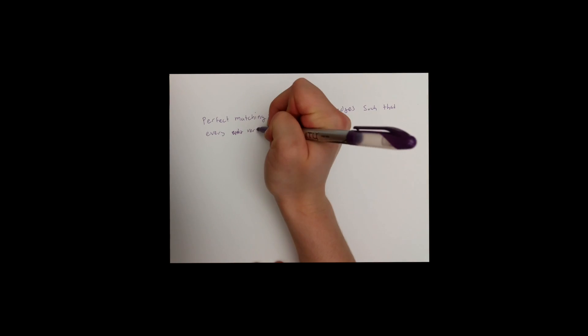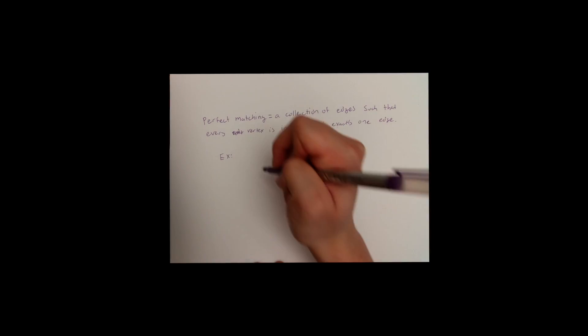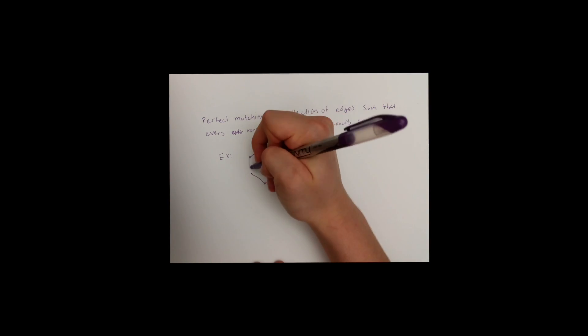A perfect matching is a collection of edges such that every vertex is incident with exactly one edge. Here we show a hexagon and its subsequent perfect matching.